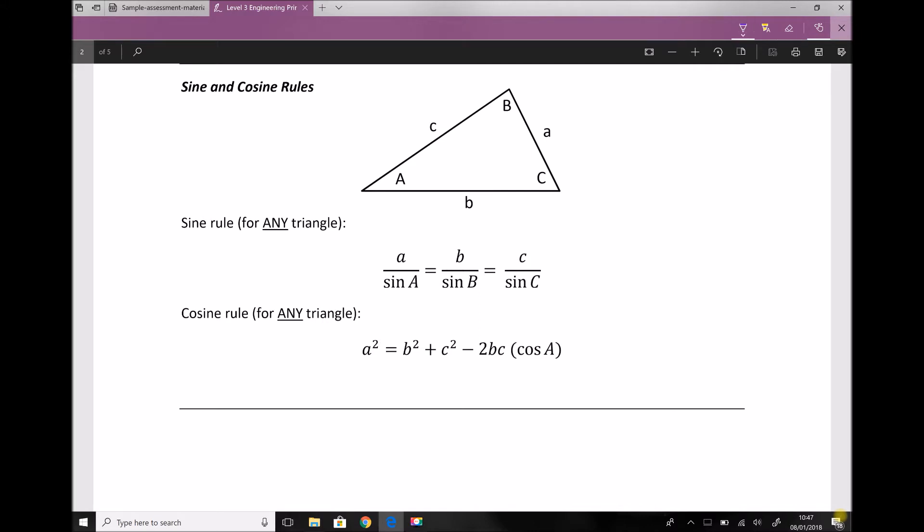One thing you'll note about the sine rule is that if we isolate two terms—let's say a over sin A equals b over sin B—the only way we can find an unknown angle, let's say angle A, is by knowing one of the other angles, like angle B.